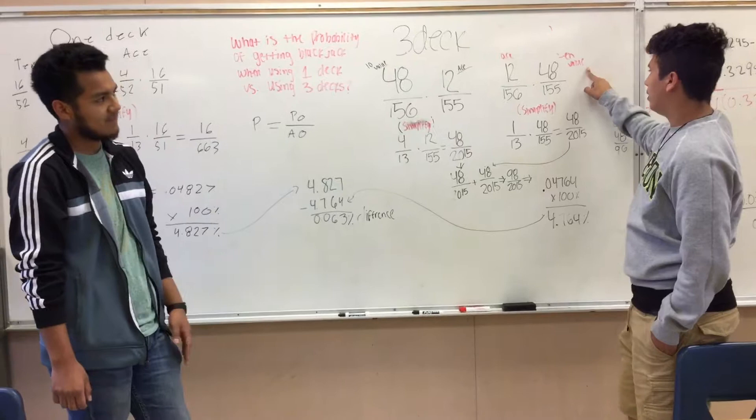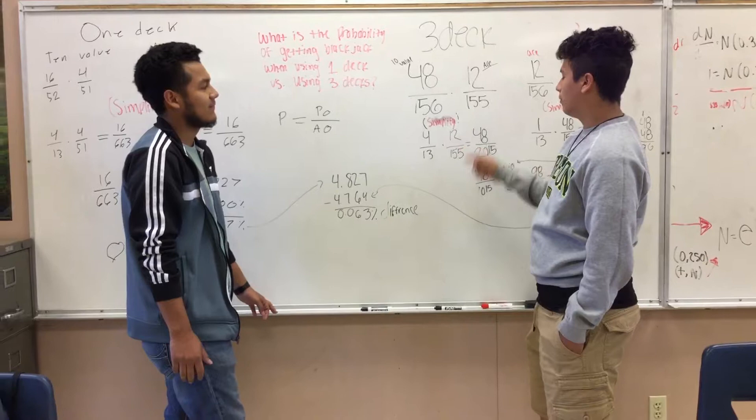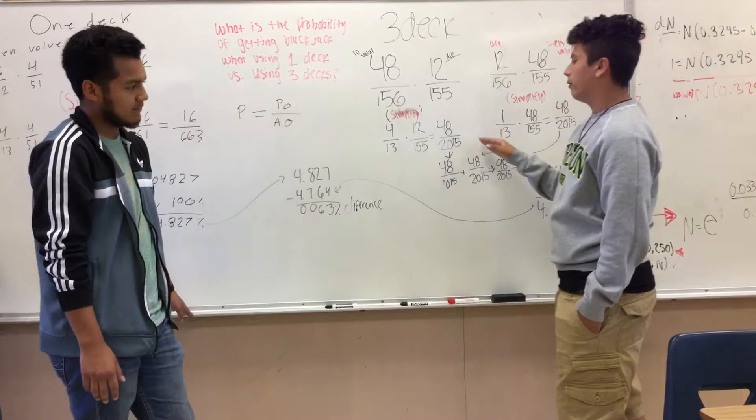So then we simplified and got 4/13 times 12/155. You multiply them straight across and you get 48/2015.